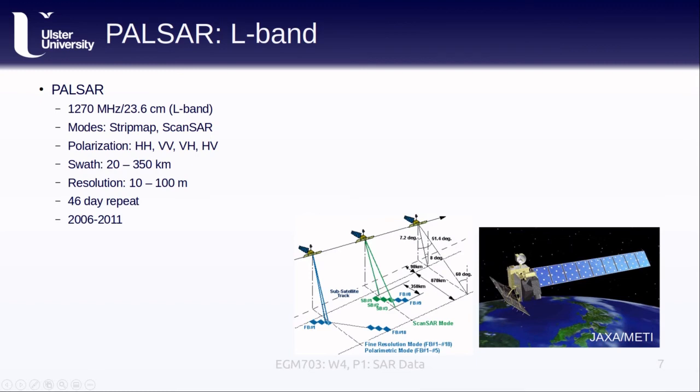PALSAR, the Phased Array Type L-band Synthetic Aperture Radar, operated at 1270 MHz, or 23.6 centimeters. It had a few different strip map and scan SAR modes, and this is the first sensor that we've seen that acquired cross-polarized signals. That is, that it operated both a horizontally and vertically polarized transmitter, and also acquired cross-polarized signals, so the vertical transmission and the horizontal receiving, horizontal transmission and vertical receiving. This means that it provides a bit more information about the surface characteristics that we're observing. It operated on a swath width between 20 and 350 kilometers, with a spatial resolution between 10 and 100 meters, again depending on the mode. It had a much longer repeat cycle than we've seen so far, at 46 days, and it was in operation from 2006 until early 2011.